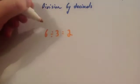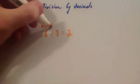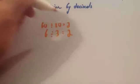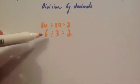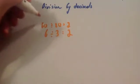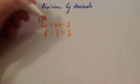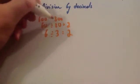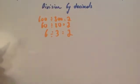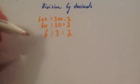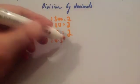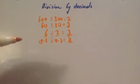If I multiply the 6 by 10 and the 3 by 10, I get 60 divided by 30. Two 30s go into 60 — the answer is unchanged. Whenever you multiply both the number you're dividing and the number you're dividing by by the same value, you get the same answer. Likewise, 6×100 and 3×100 gives 600 divided by 300, which is still 2. Similarly, dividing both by 10 gives 0.6 divided by 0.3, and the answer is still 2.